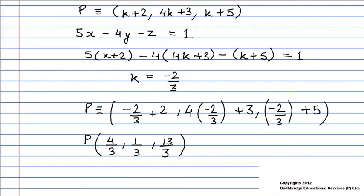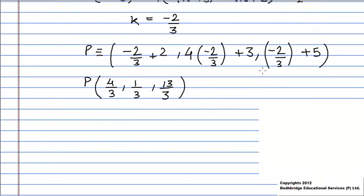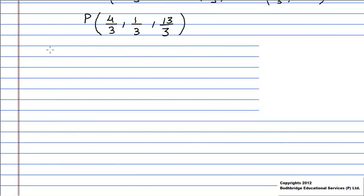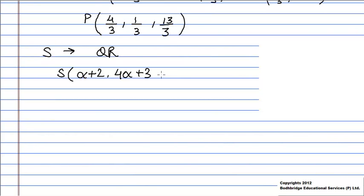Now we will find out the point S. Given that S is the foot of the perpendicular drawn from point T on QR, point S also lies on the line QR. Let us say it is given by (α + 2, 4α + 3, α + 5).